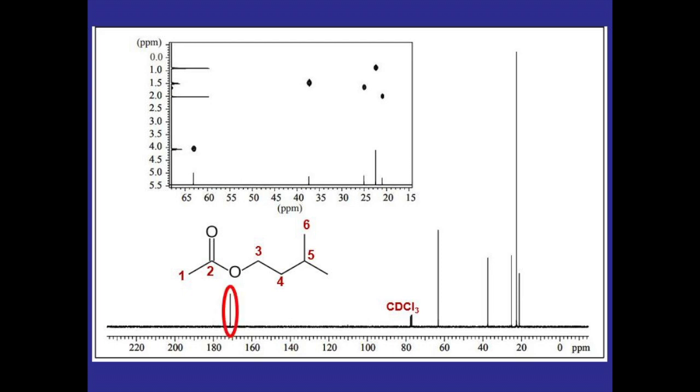For example, this peak around 170 ppm's would be for the most deshielded carbon, which would be the carbonyl carbon, so carbon number two.